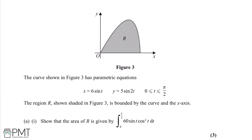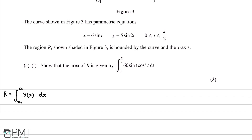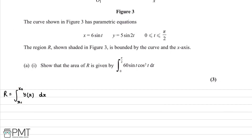For a question with parametric equations, we use the formula: the shaded region R equals the integral of y as a function of x with respect to x, with limits in x. We can rewrite this with limits t1 and t2 as: y in terms of t, multiplied by dx/dt, integrating with respect to t.